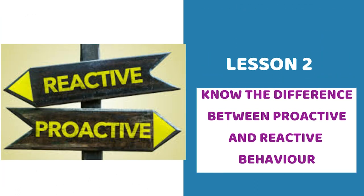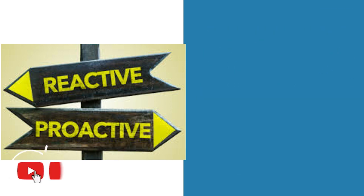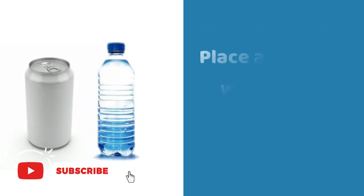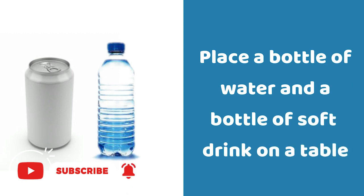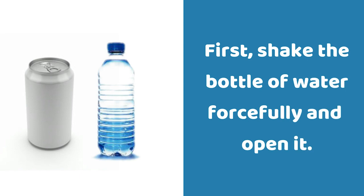Let's start with lesson two: know the difference between proactive and reactive behaviors. Let's do a little experiment. Place a bottle of water and a bottle of soft drink on a table. Make sure you are in a safe space so you do not stain a sofa or carpet. First, shake the bottle of water forcefully and open it. Write down your observations.